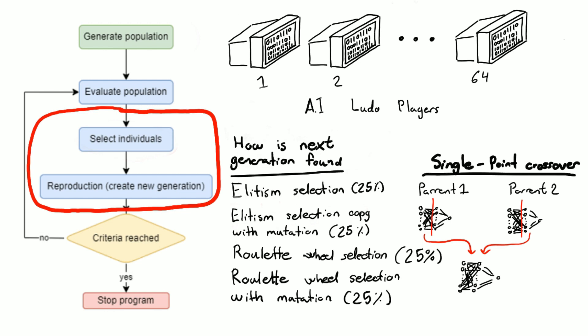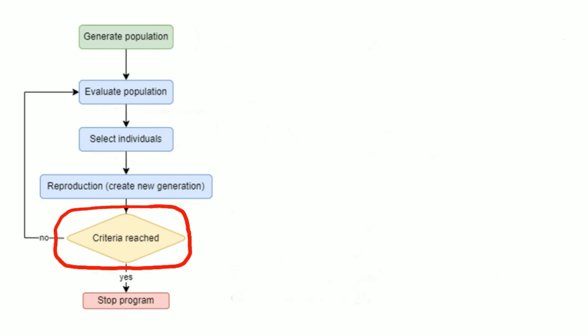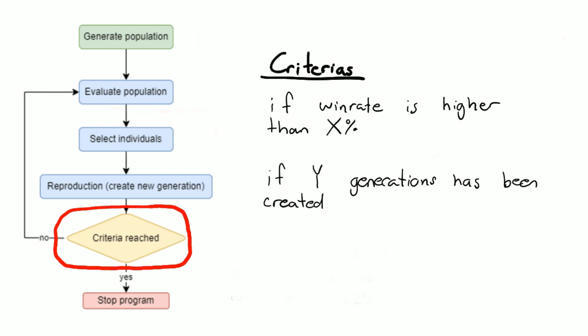And then we reach the criteria stage where we can make a certain criteria for if the program should stop or we should try and create new children again. That criteria could, for example, be if it has a high enough win rate, or what I did is if enough generations have passed. So all we've gone through now is a generation, and for example I said 75 generations for mine and then we can see how good this is.